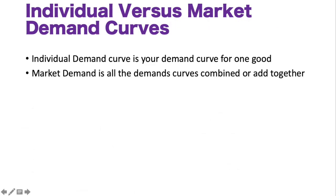Looking at individual demand compared to market demand: market demand is essentially all of the individual demand curves added together. We saw individual demand curves for candy bars earlier. You take everyone's individual demand — yours, mine, everyone in the market — add them all together, and that gives us the market demand schedule.